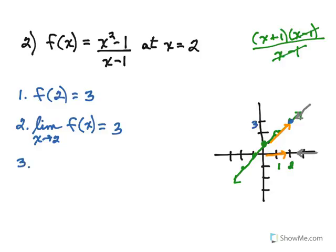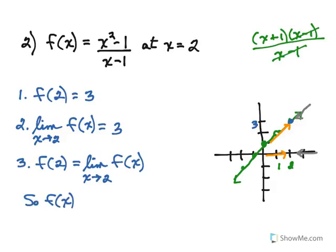The third test is that the function value needs to equal the limit, which of course in this case it does. So we conclude that the function f of x is continuous at x equals 2.